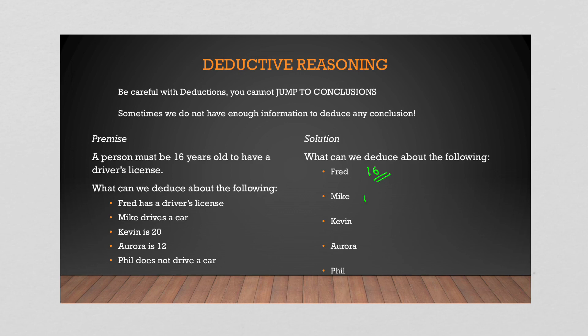So in this case, we just say nothing. There's nothing I can deduce with certainty about Mike. I could come up with a whole bunch of assumptions, but we don't want to come up with assumptions. We want certainty. So Mike, sorry, nothing we can do for Mike. Kevin is 20. Well, good for Kevin. He's older than 16. So he could have a driver's license, but maybe he doesn't. So again, we can deduce nothing. Aurora. Now this is the opposite case of Kevin. Aurora is 12, which means Aurora is not old enough to have a driver's license. So we can say with certainty that Aurora does not have a license. We can't say the same thing for Kevin because he's older and it's his choice. But for Aurora, she has no choice. No driver's license for you. And then the last one, Phil does not drive a car. Okay. Well, that doesn't mean Phil doesn't have a driver's license. And we also know nothing about Phil's age. So again, nothing.